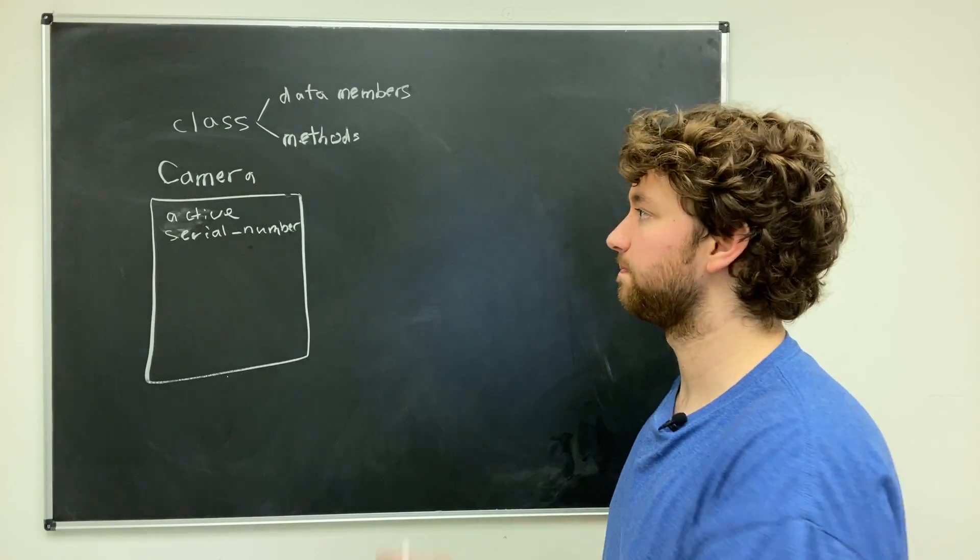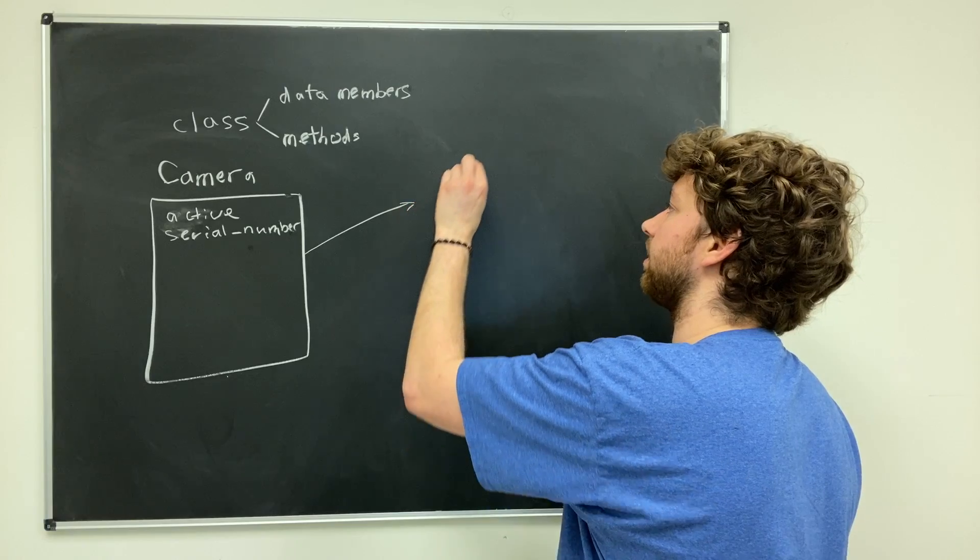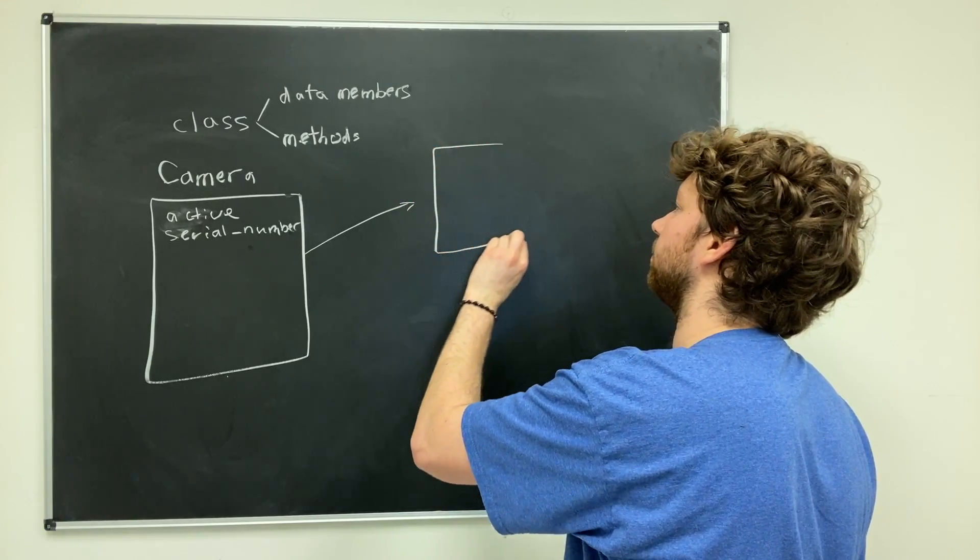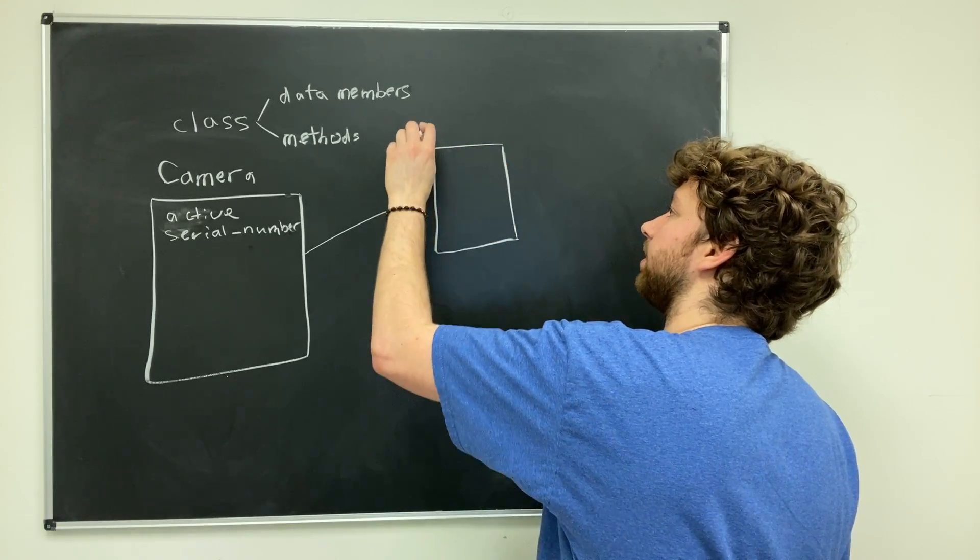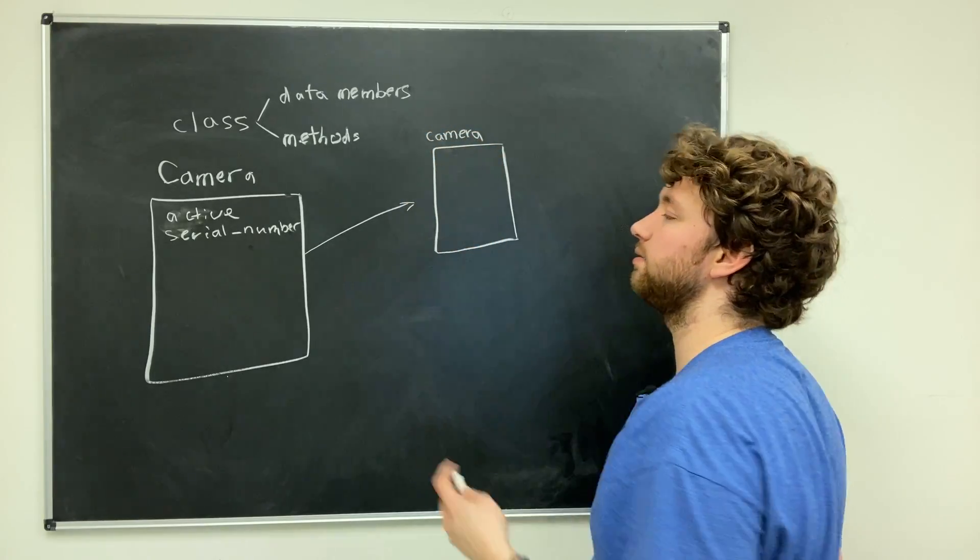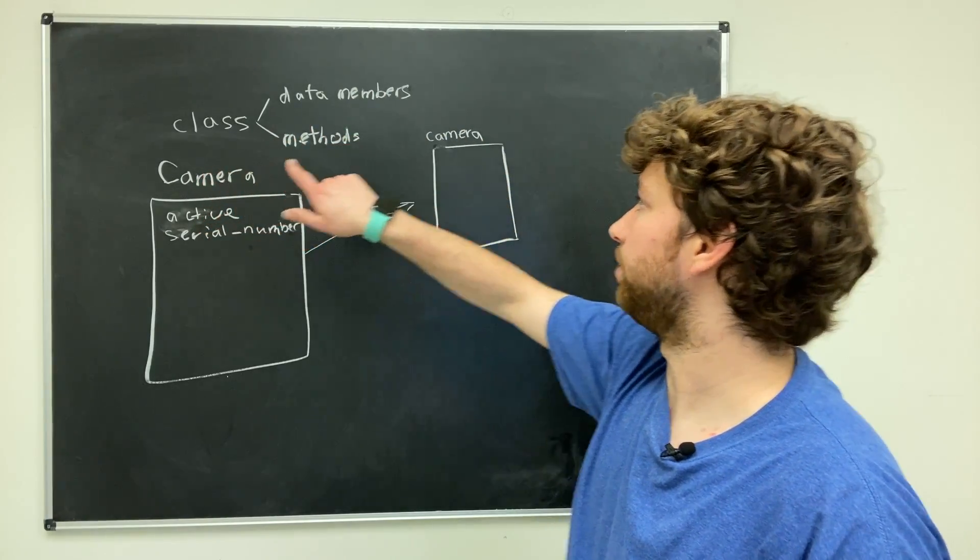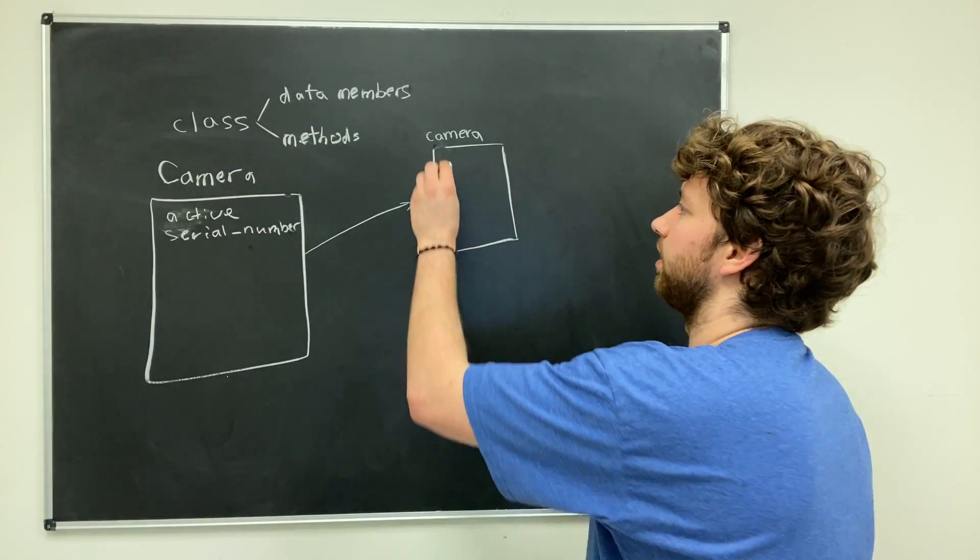We use this class to create a specific camera, and this is what it might look like. The way we would create this camera is by creating a variable—often by convention it's the same name with a lowercase c, but you can name it whatever you want, it's just a variable.